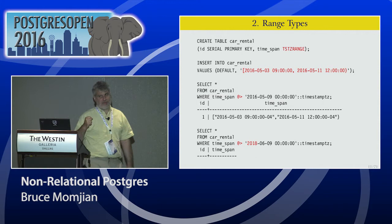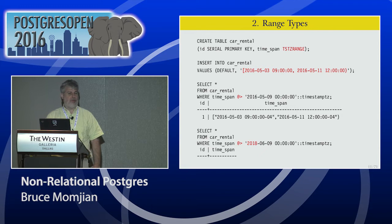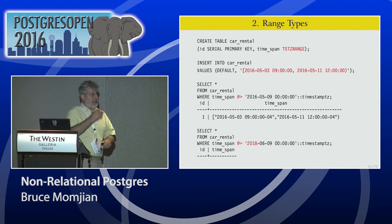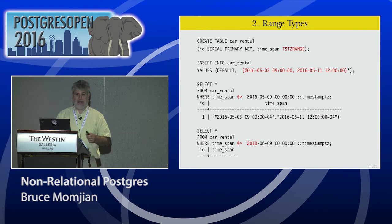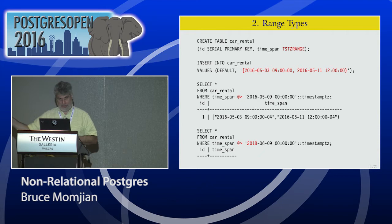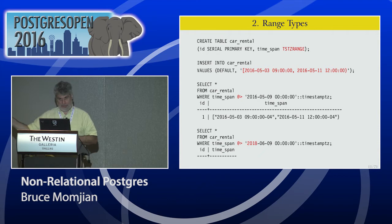Number two: range types. This is a cryptic data type that a lot of people don't see the value for right away. Right here we create a car rental table with a column for the car, and then we create a time span — very cryptically called TSTZ range, which represents a timestamp with time zone range. Effectively it's a start and stop time in one field.